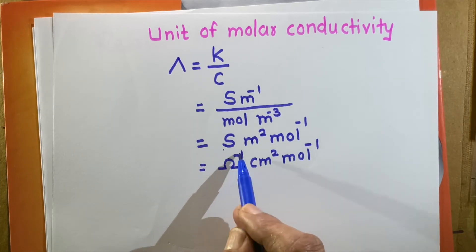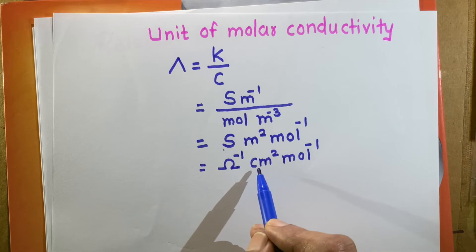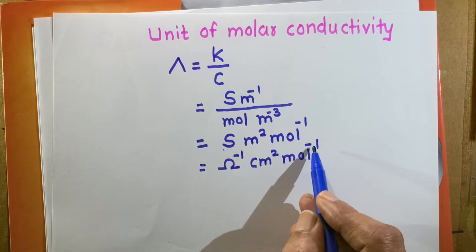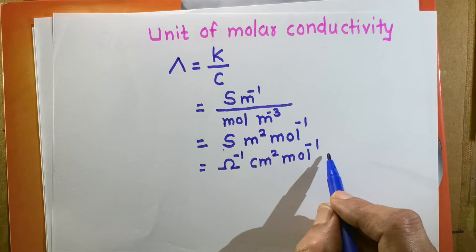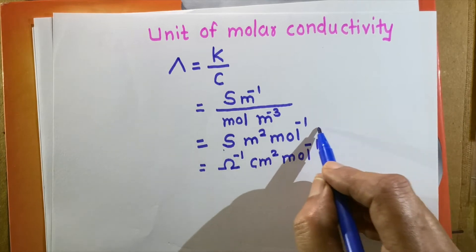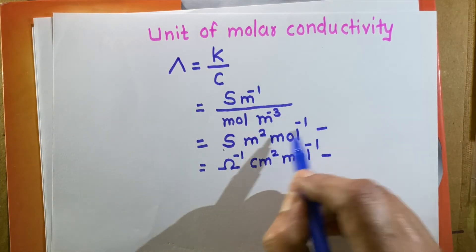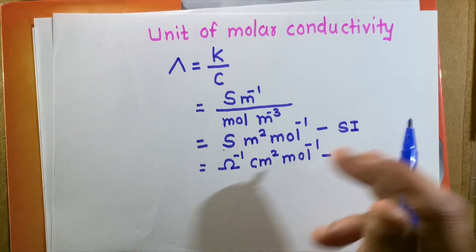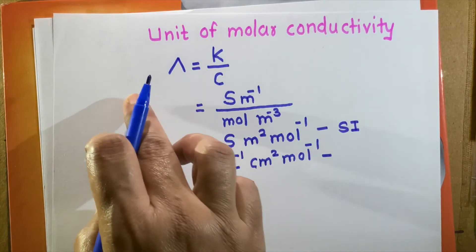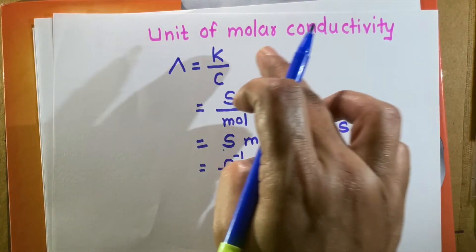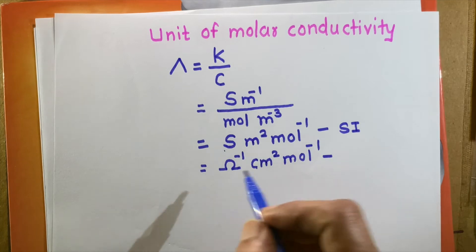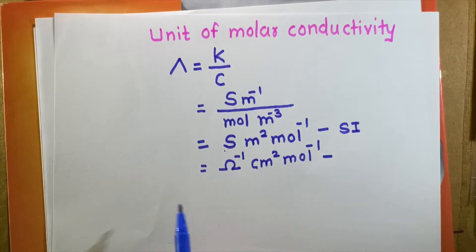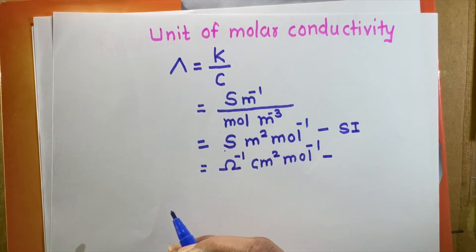Since Siemens equals Ω⁻¹, the common unit of molar conductivity is Ω⁻¹·cm²·mol⁻¹. You must remember both the SI unit (S·m²·mol⁻¹) and the common unit (Ω⁻¹·cm²·mol⁻¹) when calculating molar conductivity and conductivity.